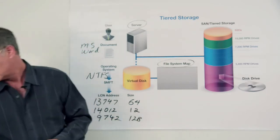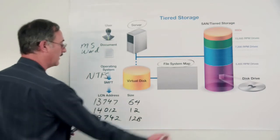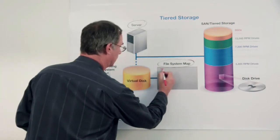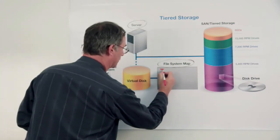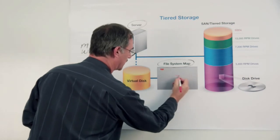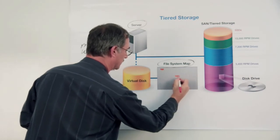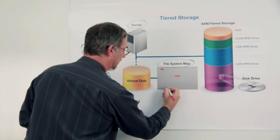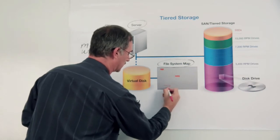And then the next location might be at 9742 for a size of 128 clusters. So as a result, you wind up having a file that has a number of pieces, maybe one piece here, maybe another piece right there, and then lastly, maybe a third piece right there.